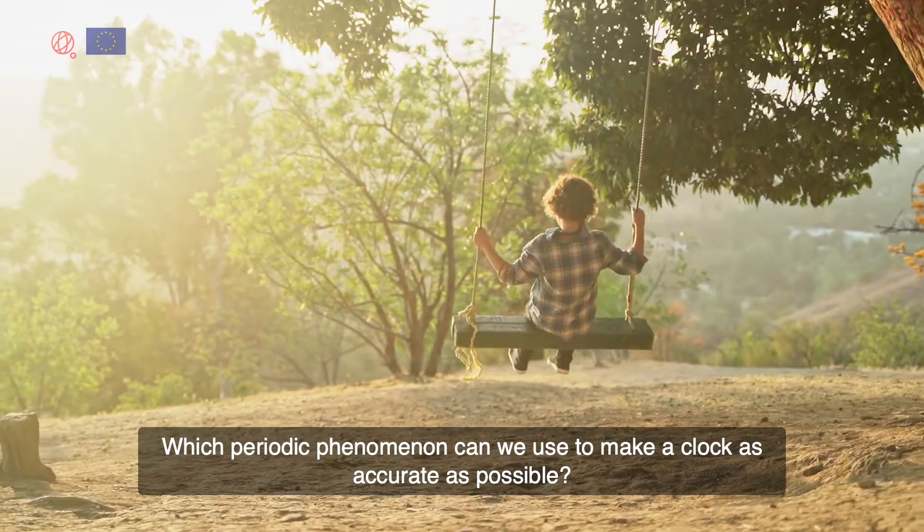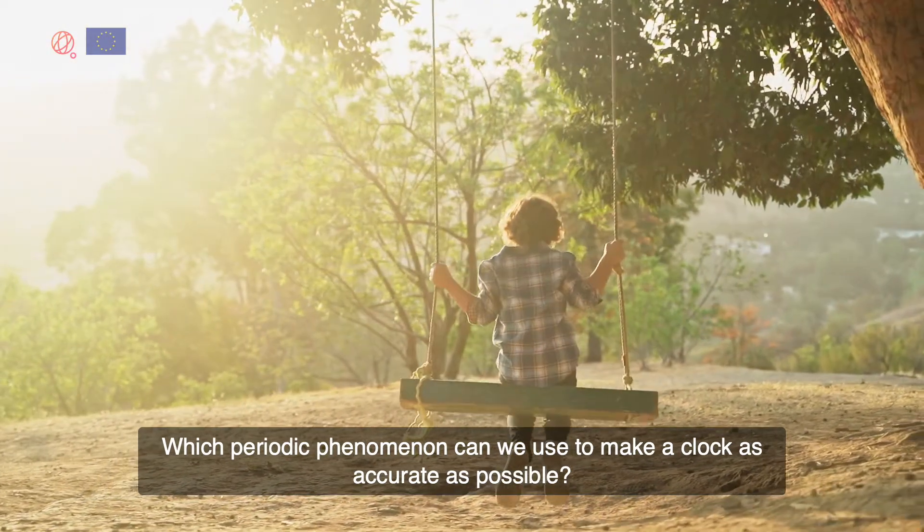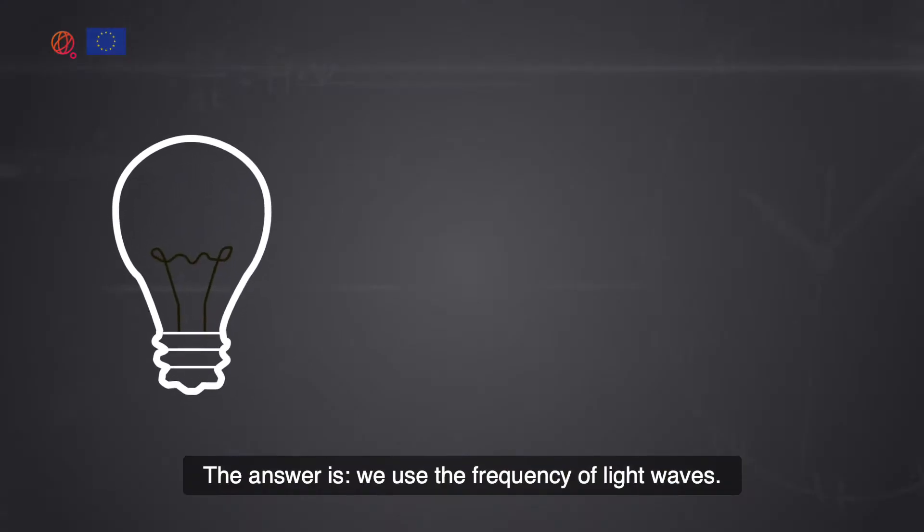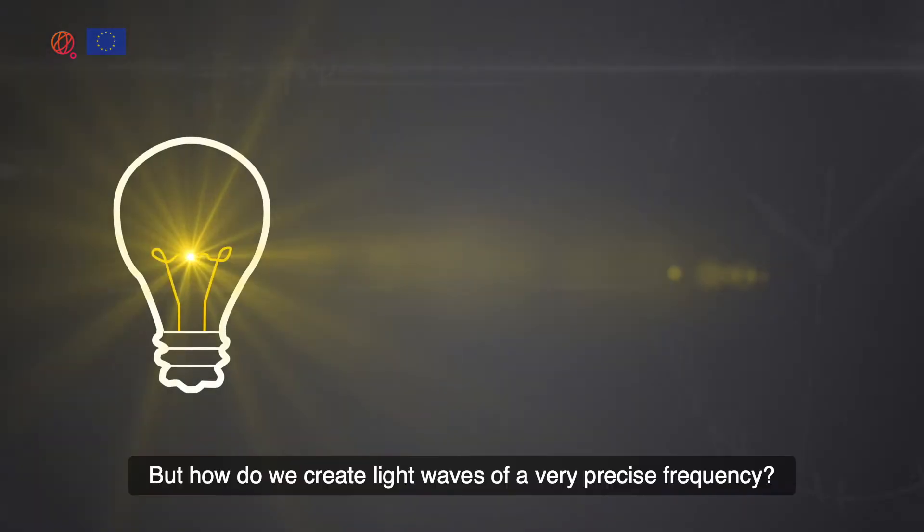Which periodic phenomenon can we use to make a clock as accurate as possible? The answer is we use the frequency of light waves. But how do we create light waves of a very precise frequency?